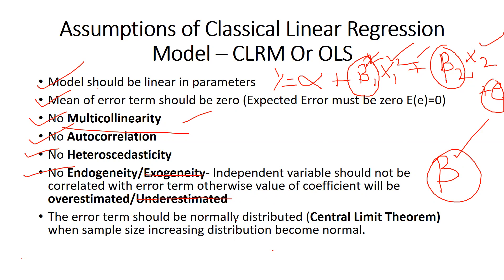The error term should be normally distributed. As per the Central Limit Theorem, which we have already studied, when we increase the sample size, the distribution becomes normal. So the error term should be normally distributed — it follows a normal distribution curve.